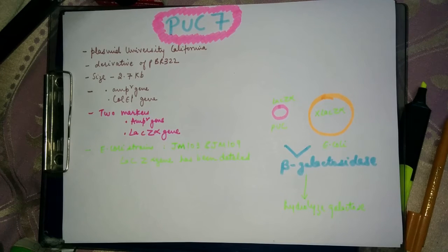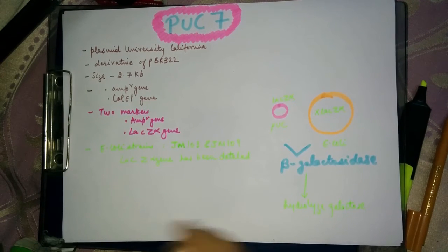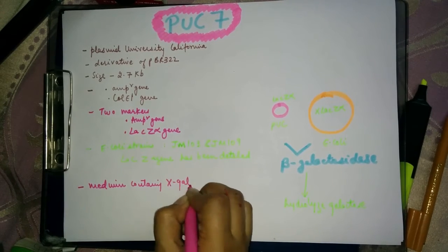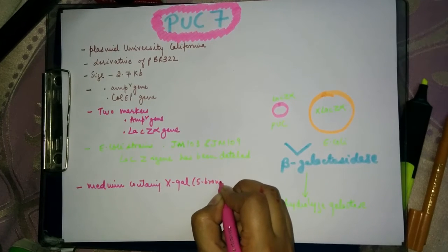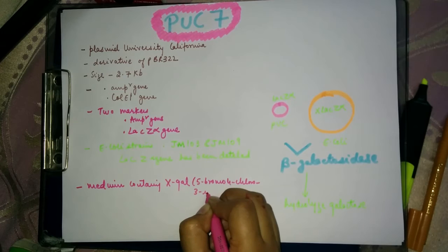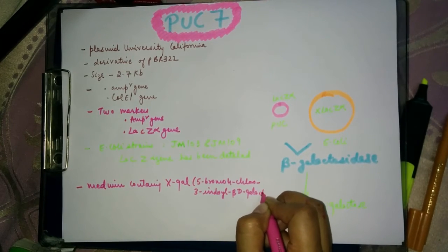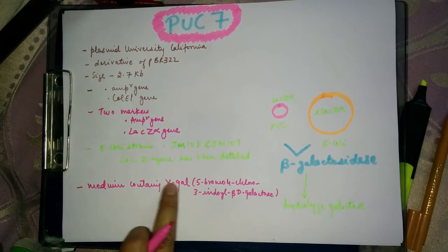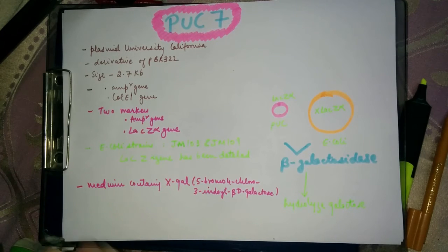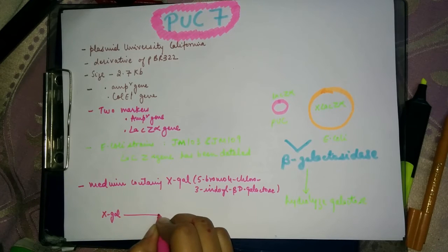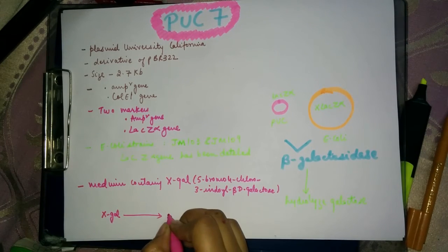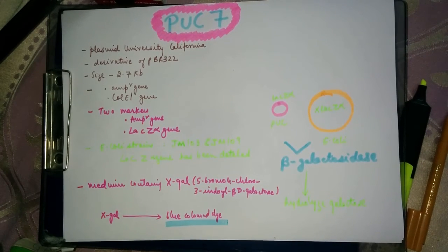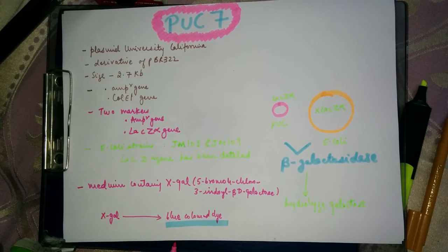To screen for this, we use a medium containing X-gal, also called 5-bromo-4-chloro-3-indolyl beta-D-galactose. Beta-galactosidase hydrolyzes X-gal to yield a blue dye. So when cells are placed in this X-gal containing medium, if beta-galactosidase is present in the cells it will hydrolyze X-gal and produce blue colored colonies.